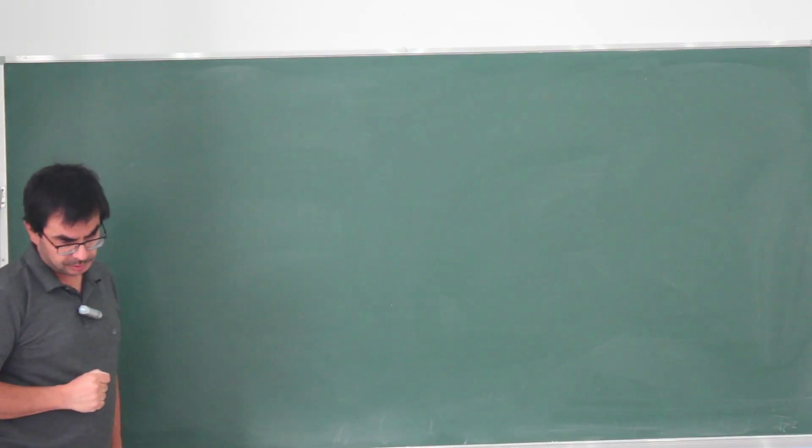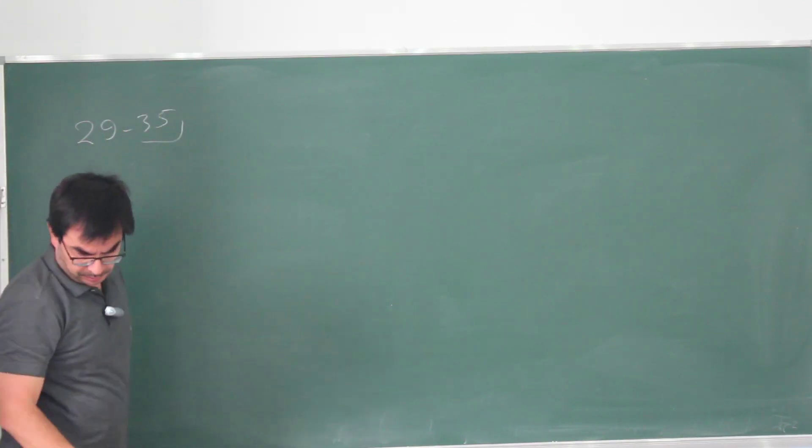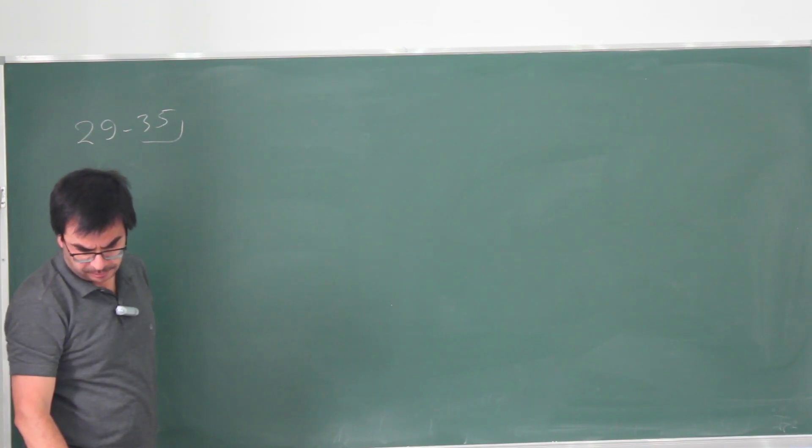This is problem 35 from chapter 29. We have a short section of wire of length A that is moving with velocity V parallel to a very long wire carrying a current I, as shown in the figure.